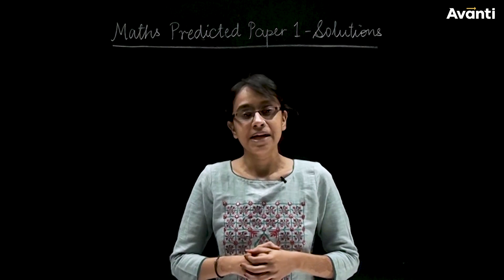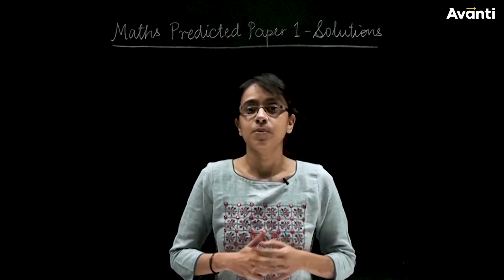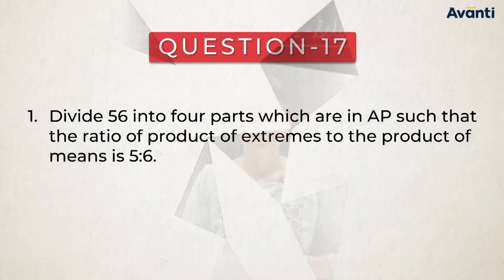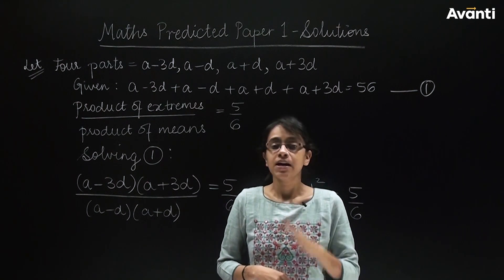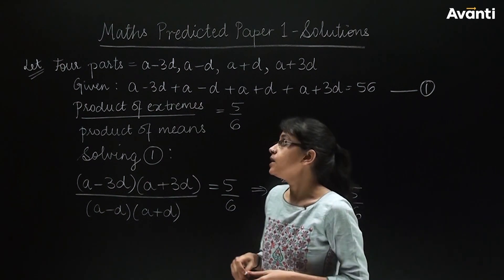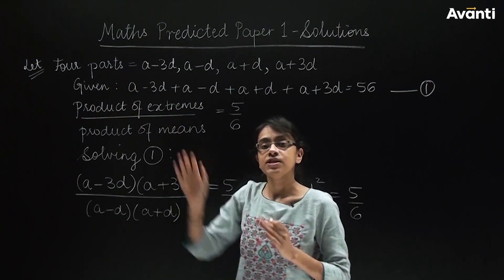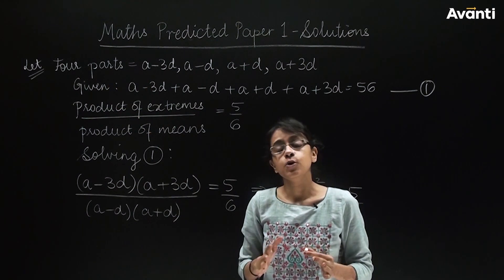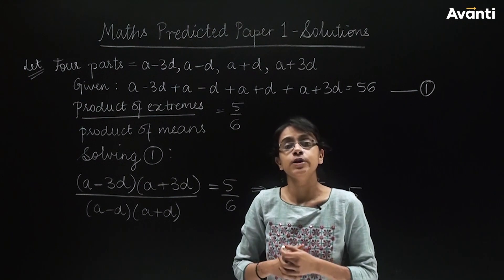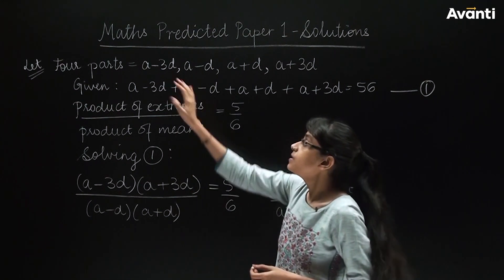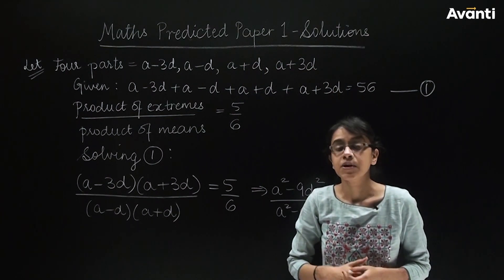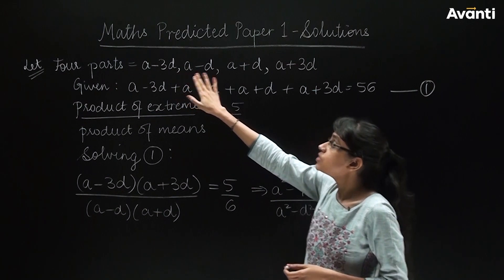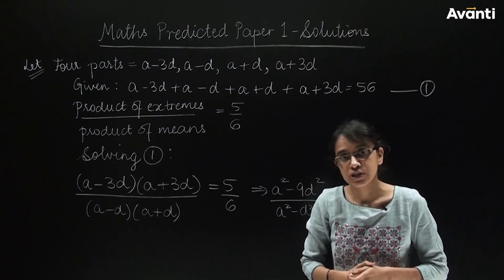The first doubt that kids had about the Maths first part test — you can see the question on your screen. In this question, we are given that there are 4 parts and the sum is 56. We have assumed these 4 parts form an AP, represented as A-3D, A-D, A+D, and A+3D. Please note that we have taken the difference this way so that the calculation will be easy.